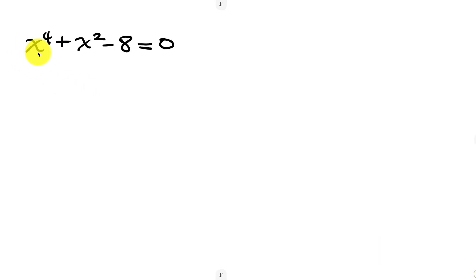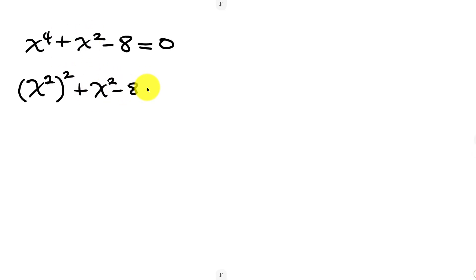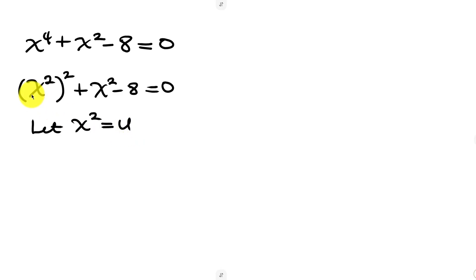Simplifying further, x to the power of 4 can also be written as x squared raised to the power of 2, plus x squared minus 8, equal to 0. So this is where we introduce substitution by saying let x squared be equal to u. Rewriting, we have u squared plus u minus 8 equal to 0.